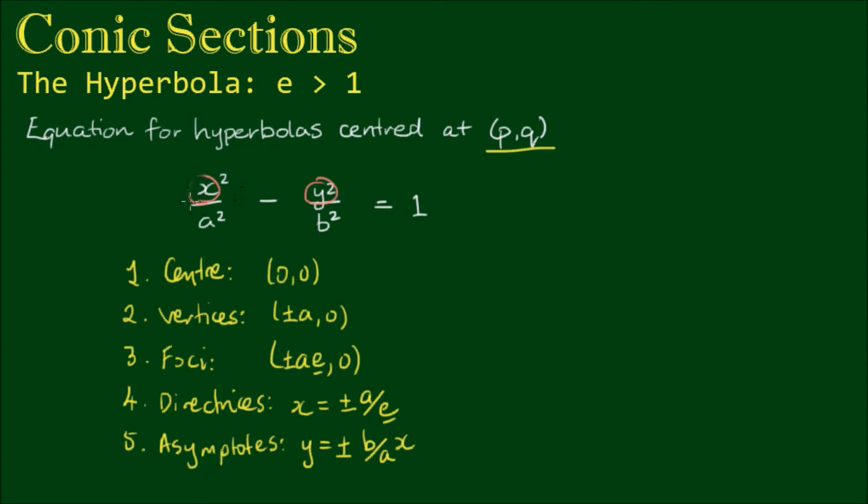So the x² term becomes (x - p)² - the variable x minus the x-coordinate of the center point all squared over a². And the y² term becomes the variable y minus q, the y-coordinate of the center point all squared over b².